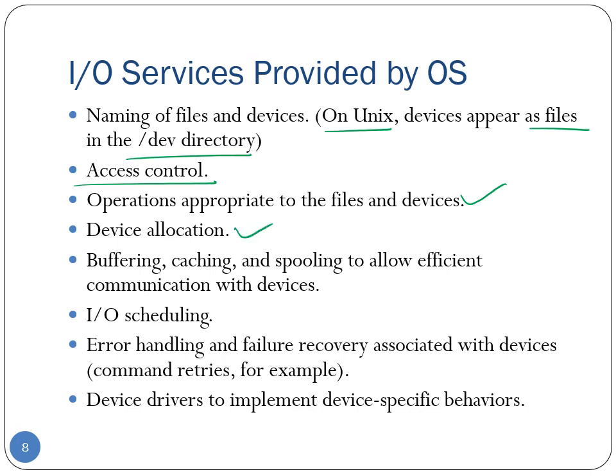Device allocation is also done by the operating system — the assignment of I/O devices to various processes so they can complete their tasks. To facilitate efficient communication with I/O devices, which are usually slow compared to the CPU, operating systems provide several additional services such as buffering, caching, and spooling. We will talk in much more detail about some of these techniques later in this unit.